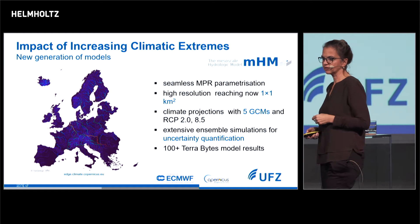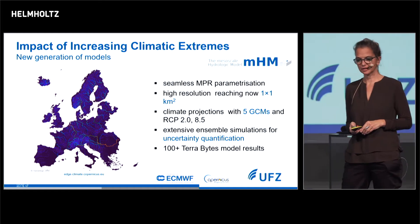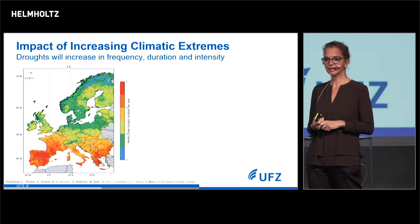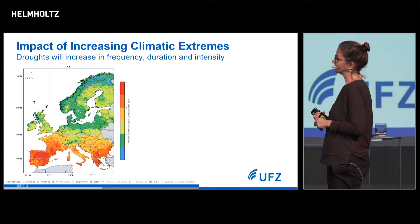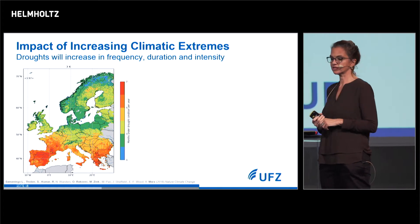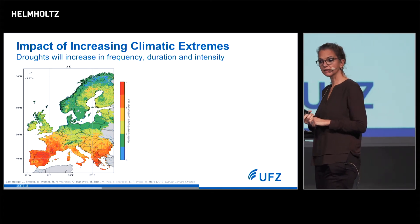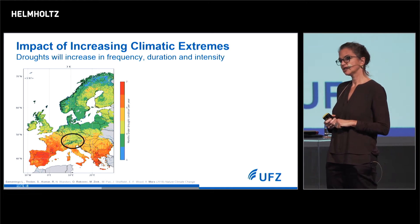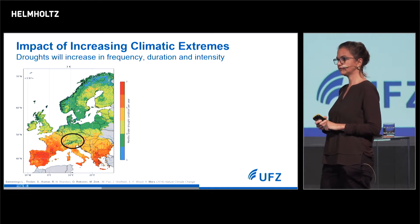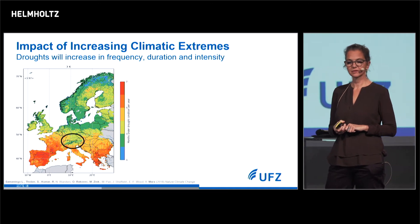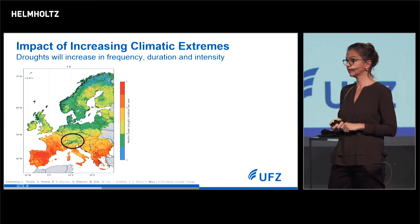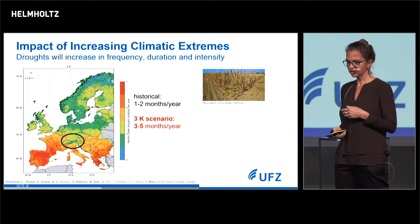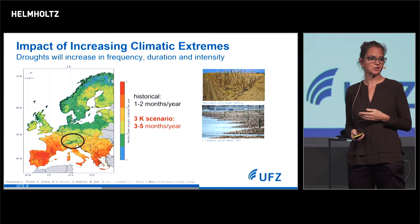Coming back to 2018, for example, we were suffering under droughts. We can extract a projection map for 2100 under a three-degree scenario showing the number of months we will probably suffer under droughts. If you focus on central Europe, you see that we will suffer three to five months under droughts every year. This has a lot of implications for agriculture, river flows, and forests.